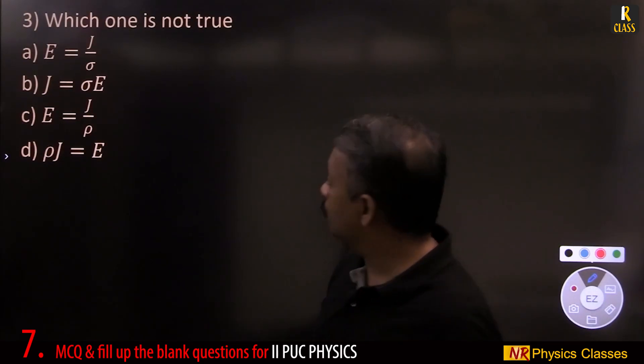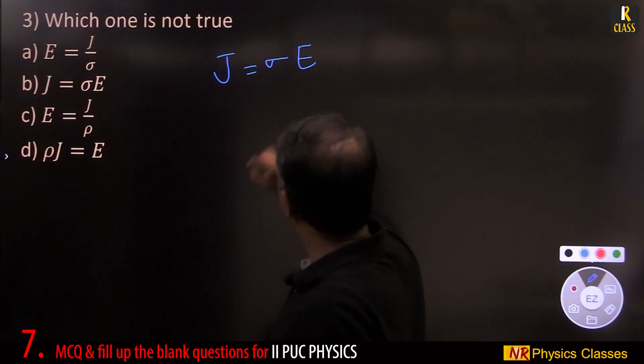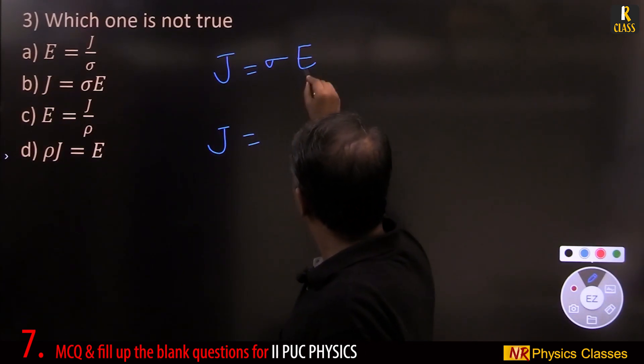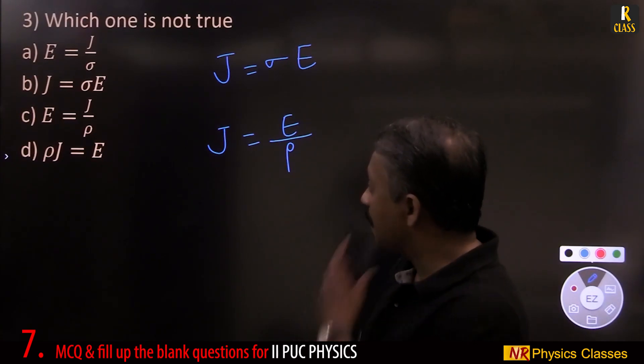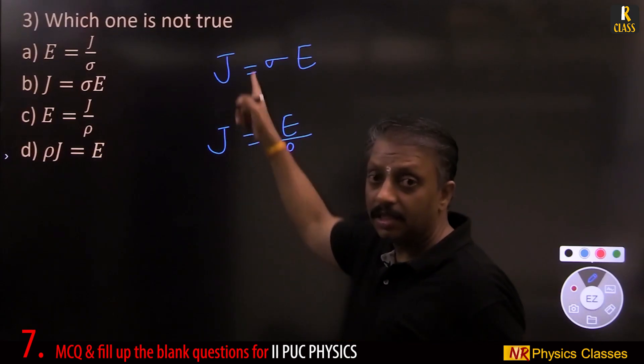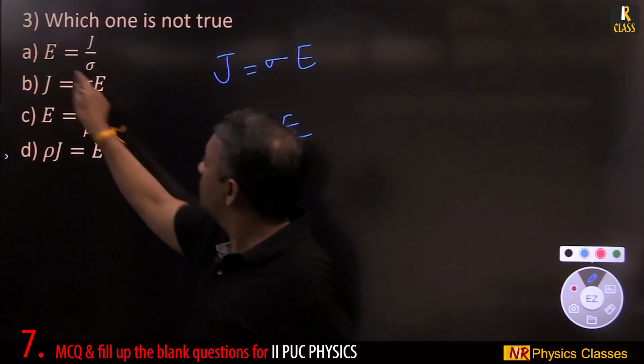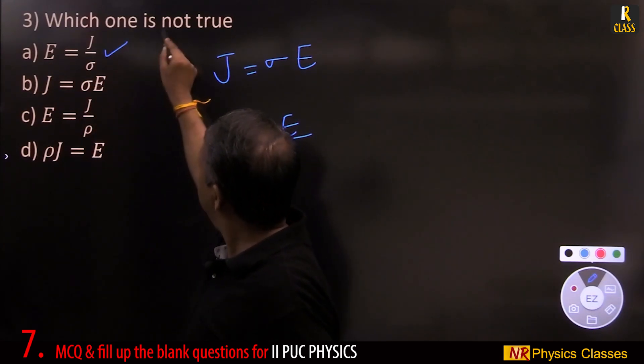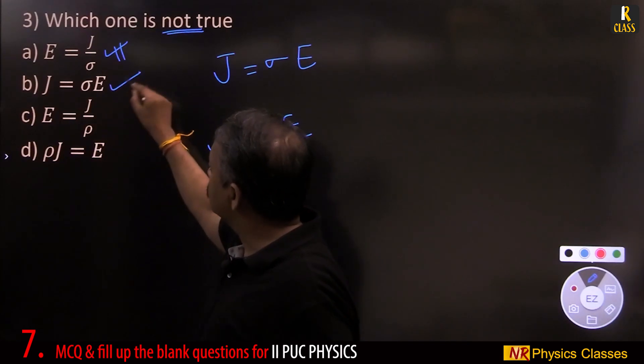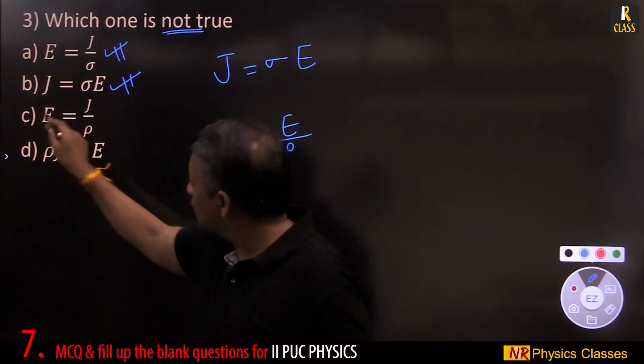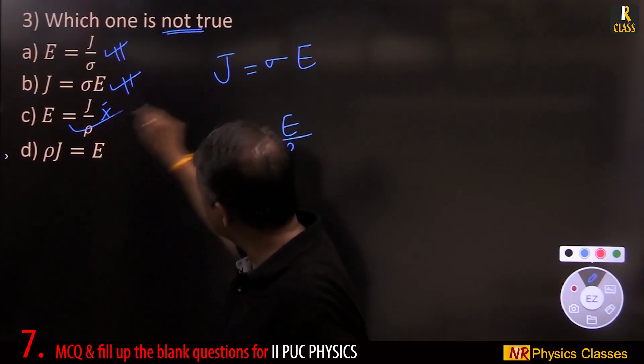Which one is not true? J equal to sigma E or J equal to E by sigma. Reciprocal of conductivity is resistivity. So both of them are correct in terms of conductivity, in terms of resistivity. J equal to sigma E, not true, this equation is wrong. Therefore, this is the answer.